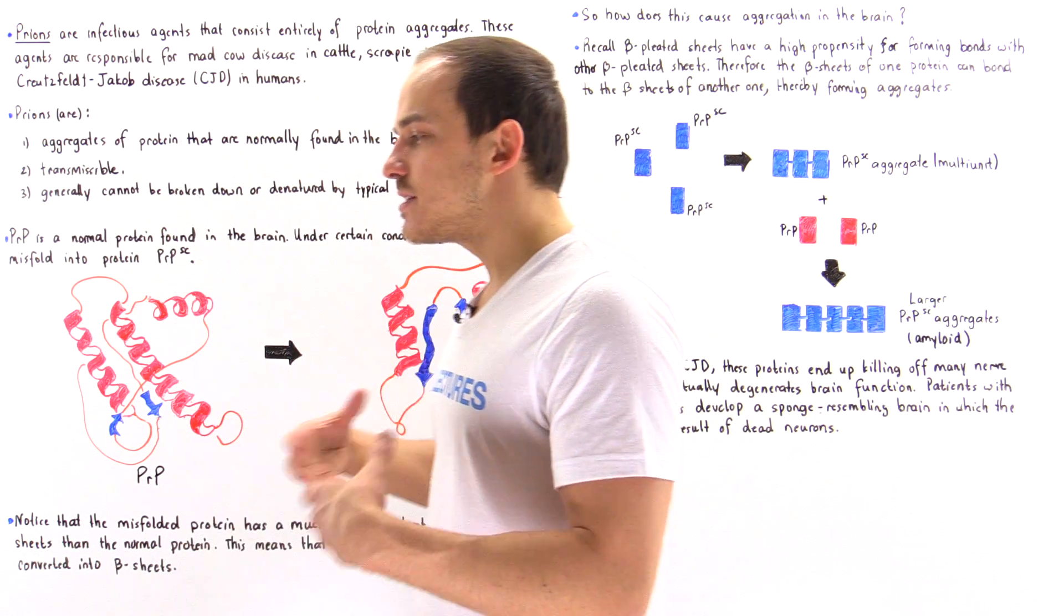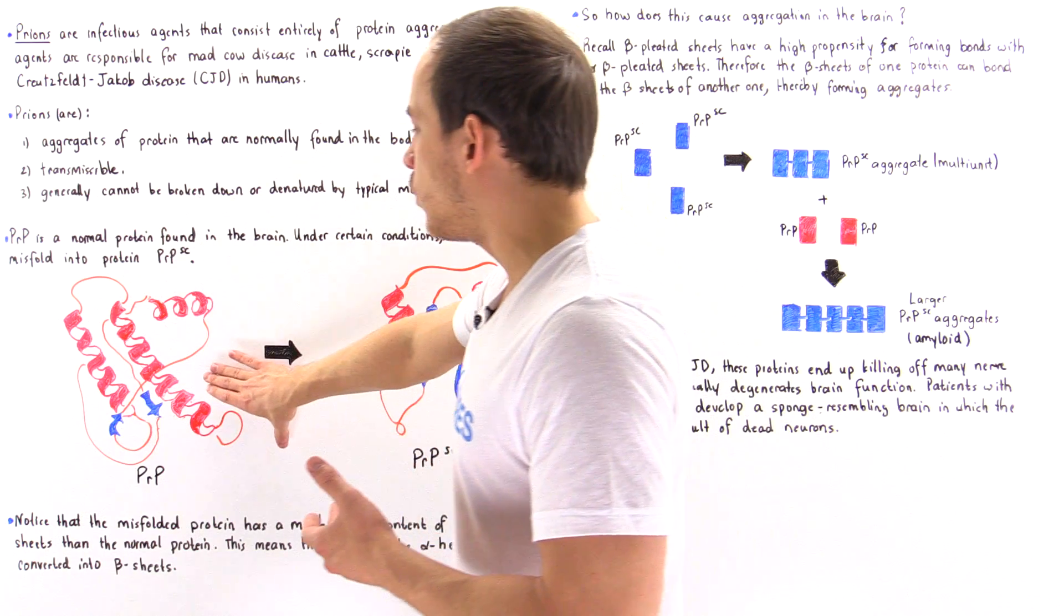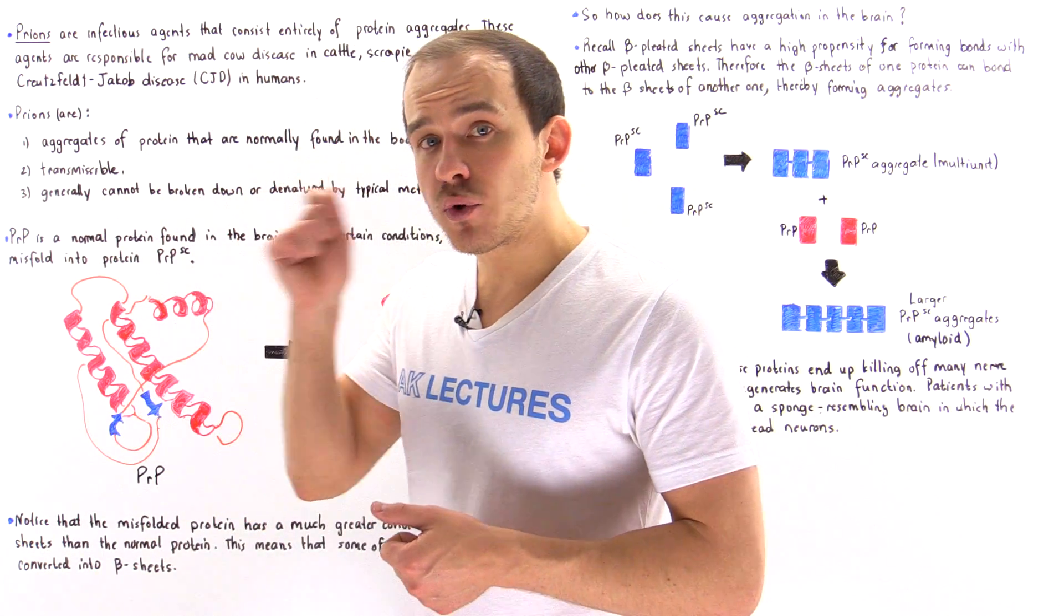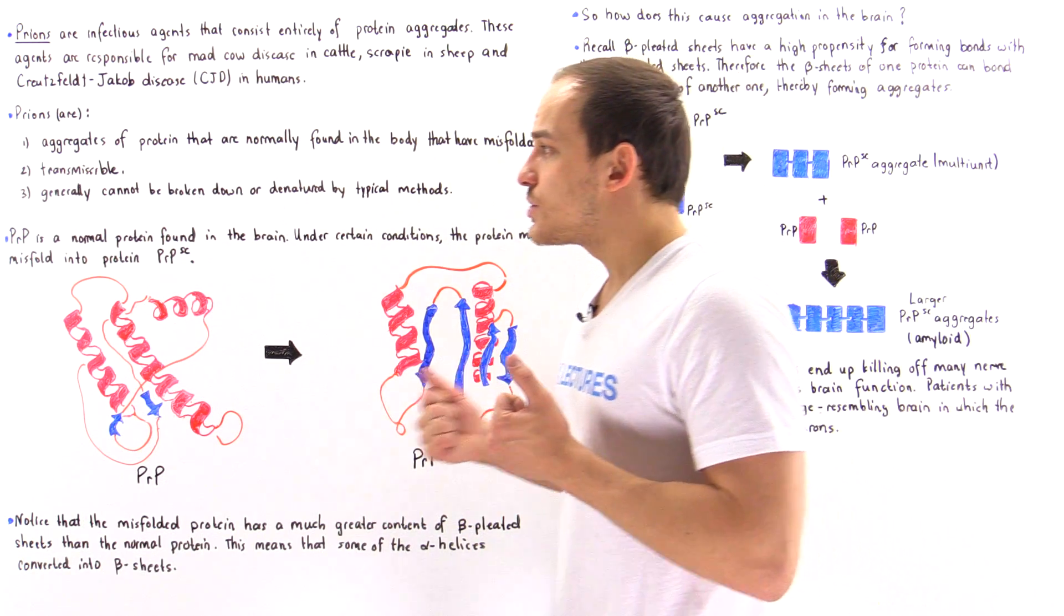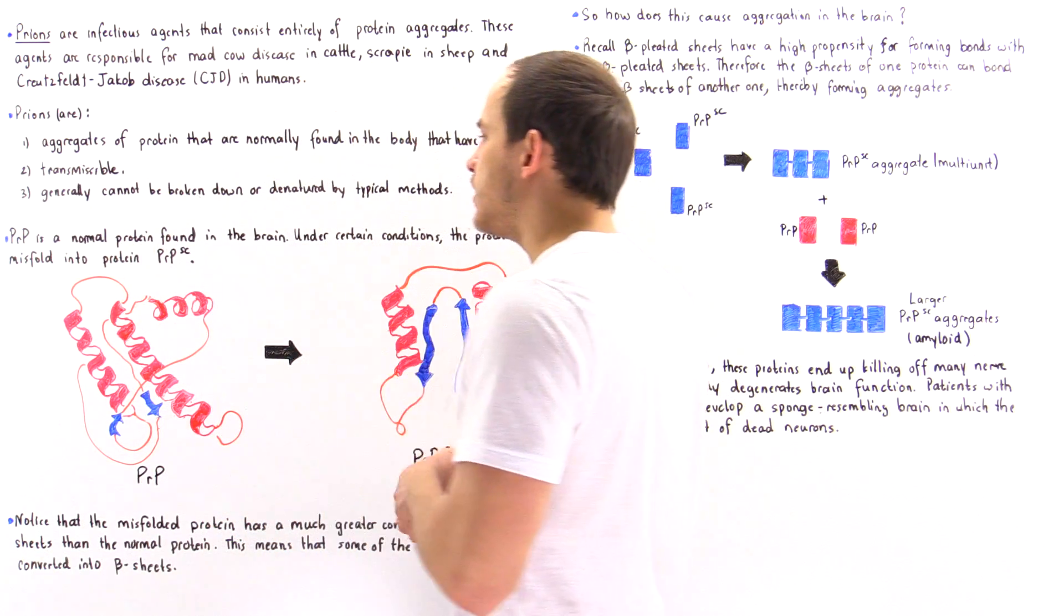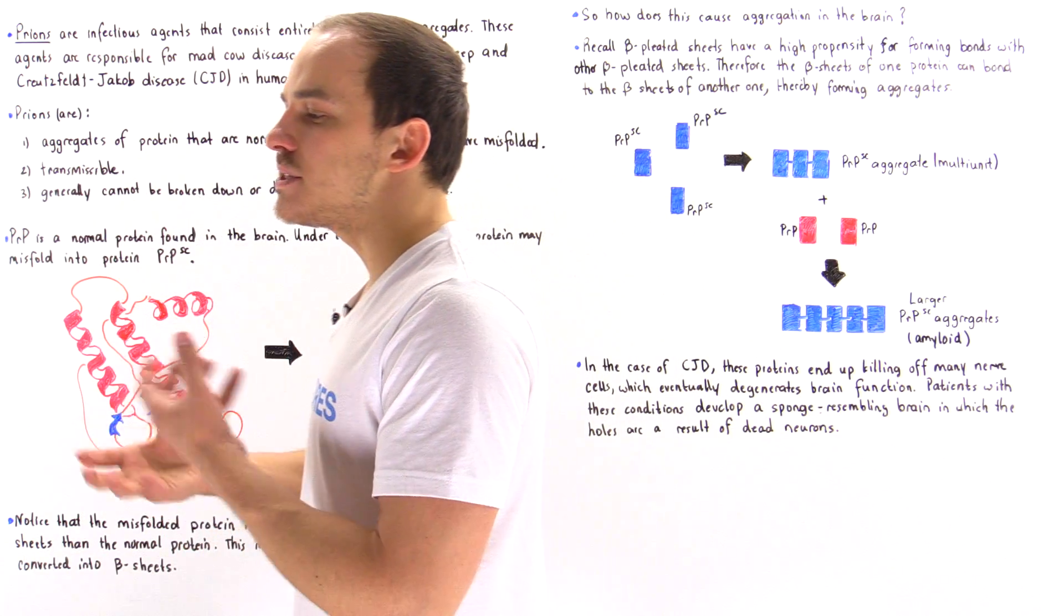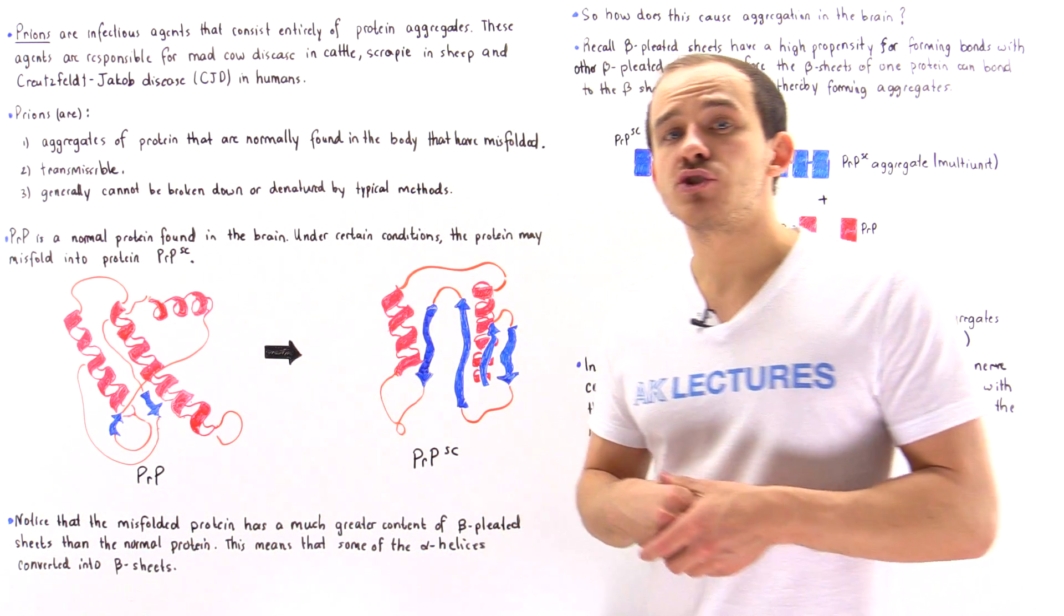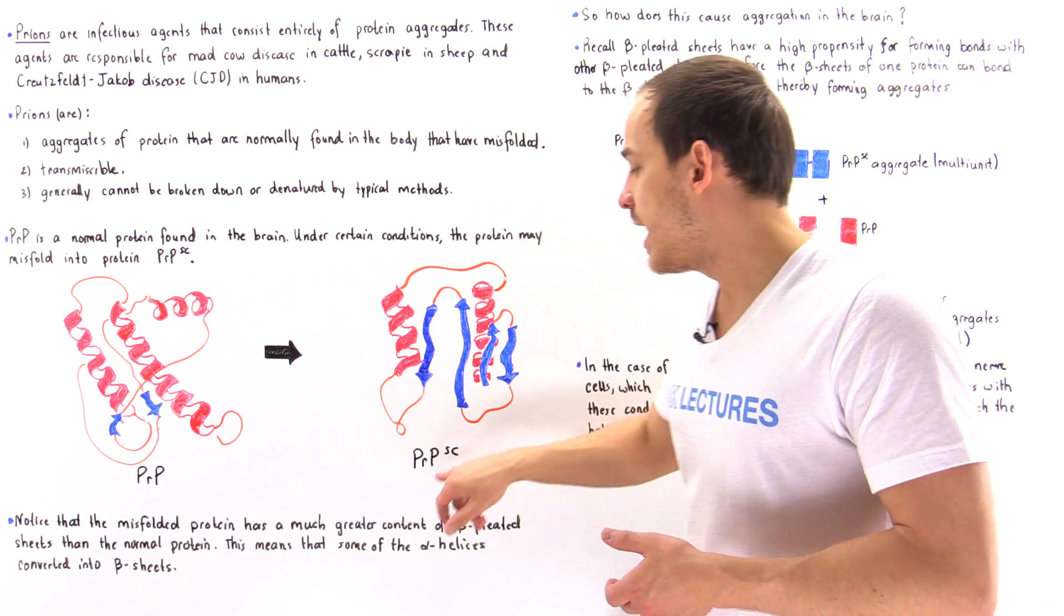To gain insight into how prions actually function, let's look at the following protein that normally exists in the brain cells of our body, in our neurons. PRP, as shown in the diagram, is a normal protein found in the brain. Under certain conditions, for example if some type of mutation takes place, this protein can misfold into this protein known as PRPSC.